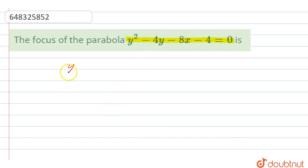Now, this parabola can also be written as y squared minus 4y equal to 8x plus 4. Okay, we are just taking 8x minus 4 on right hand side.